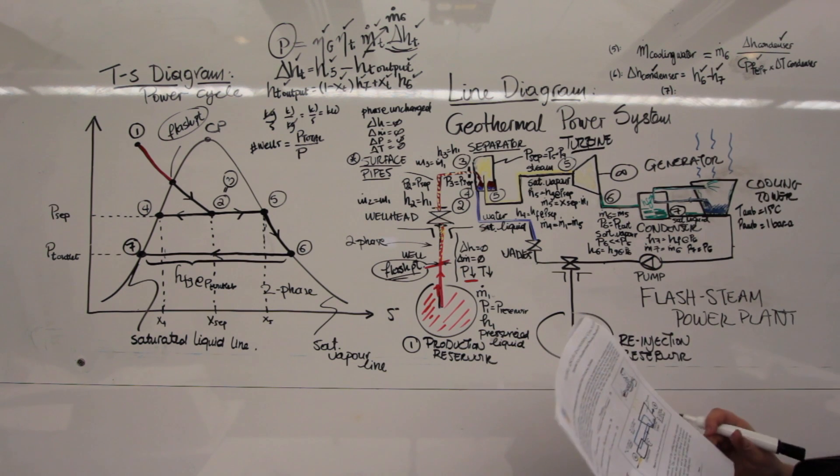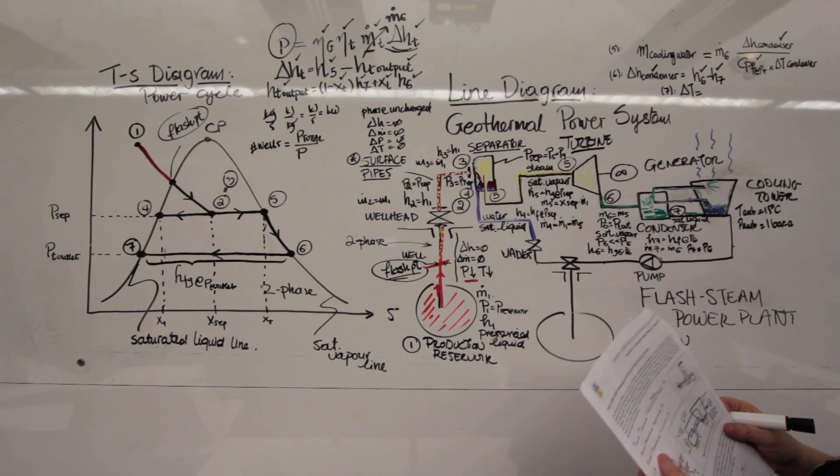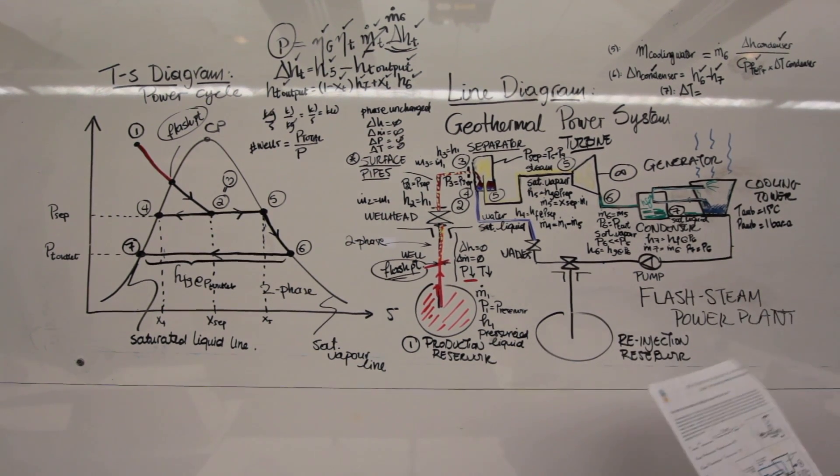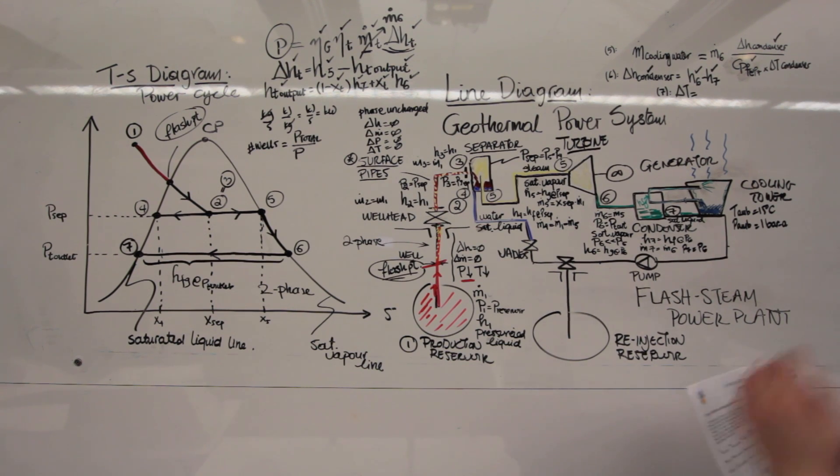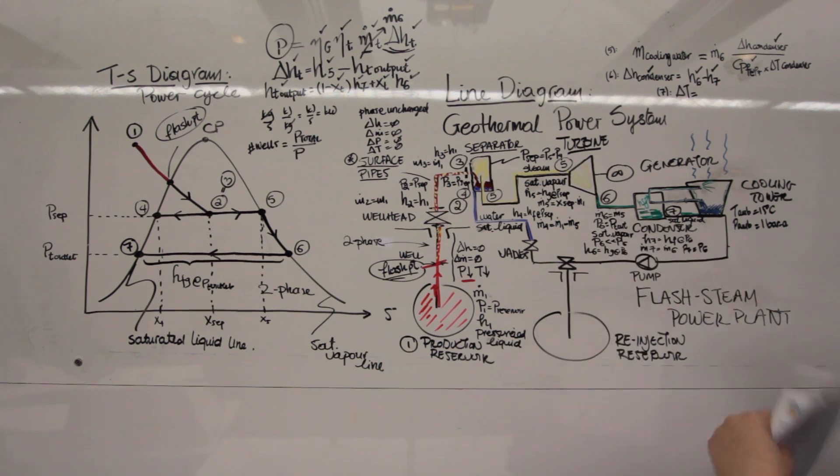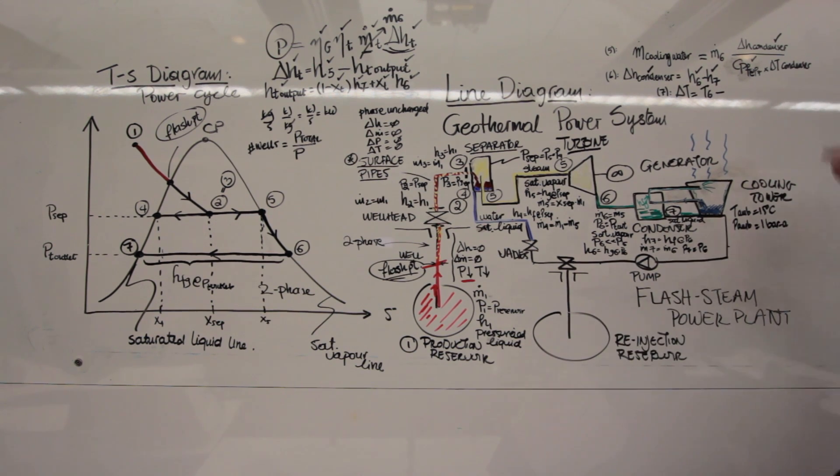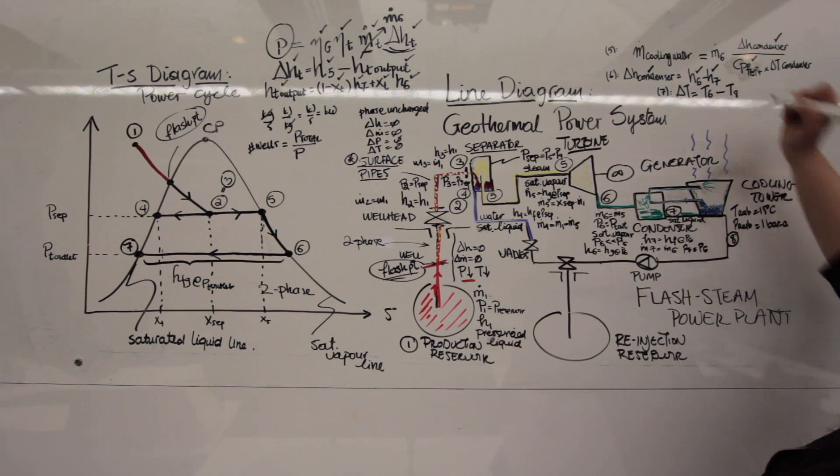And from equation 7, then we get that delta T is equal to T at the steam turbine outlet. Now that's a tricky one. We have a steam turbine outlet, right? So it would be at 6. So it will be T6 minus T at the cooling water outlet. Cooling water outlet. We assume that's at ambient conditions. So that would be T at 8, right? This is equal to 15 degrees C.